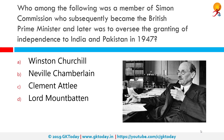Who among the following was a member of the Simon Commission who subsequently became the British Prime Minister and later oversaw the granting of independence to India and Pakistan in 1947? The correct answer is Clement Attlee. The Indian Statutory Commission, commonly referred to as the Simon Commission, was a group of seven British Members of Parliament under the chairmanship of Sir John Simon. One of its members was Clement Attlee, who became committed to Indian independence by 1934 and achieved that goal as Prime Minister in 1947, granting independence to India and Pakistan.